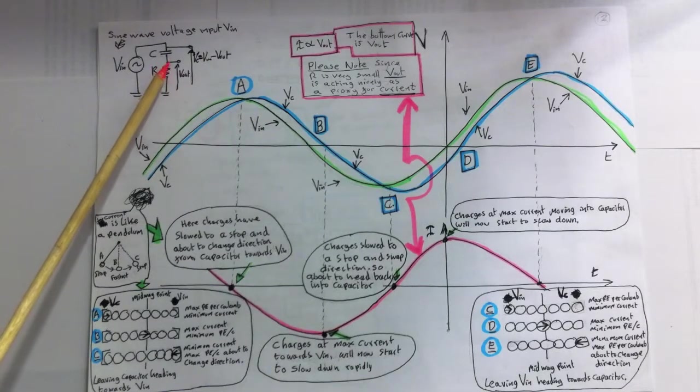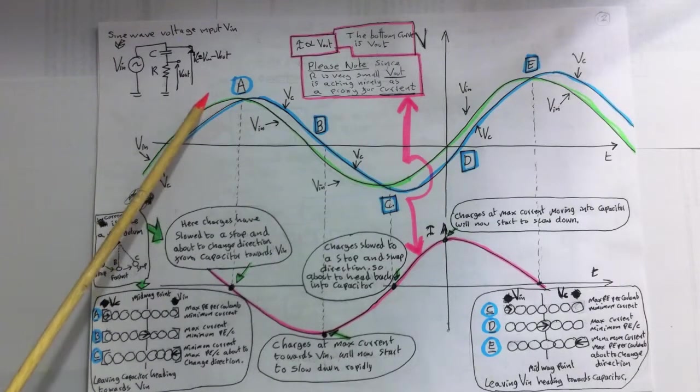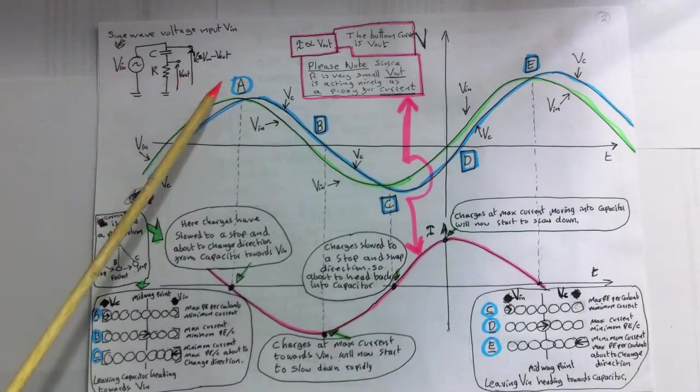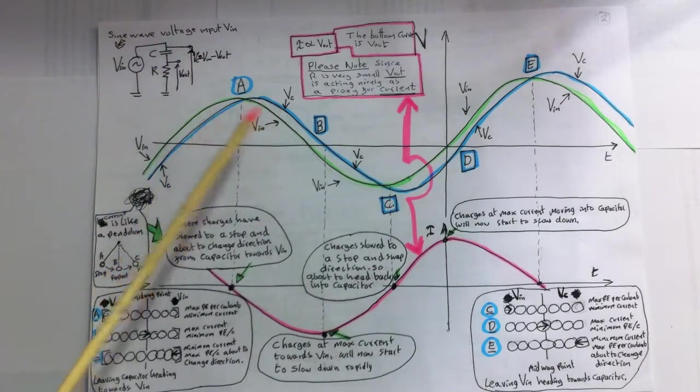So by using a very small resistor, which hardly affects the circuit, we've got a proxy for the current here. Below, I've plotted both Vin and Vc on the same graph so that we can say we've got Vin and Vc. So the total voltage drop Vin is this curve here, and the voltage that is dropped across the capacitor is this blue curve.